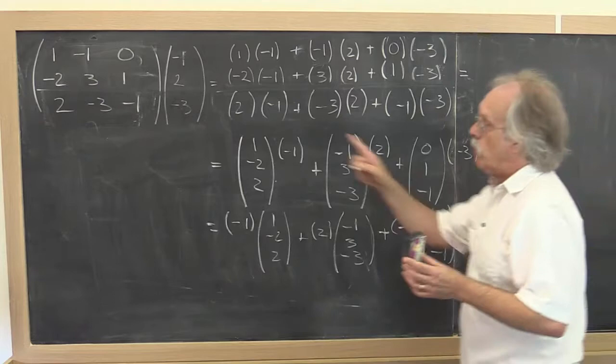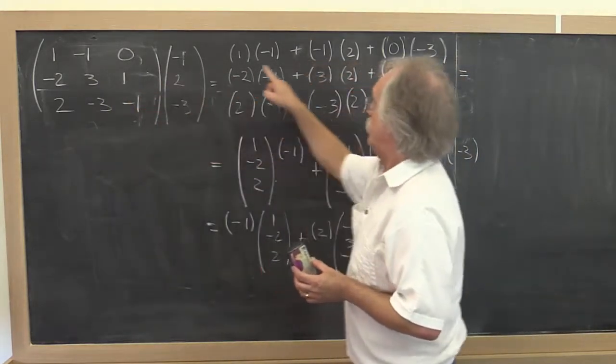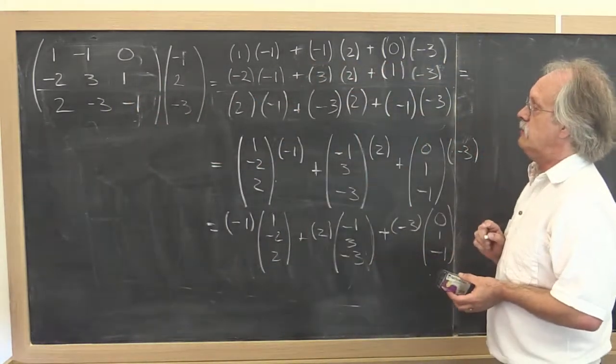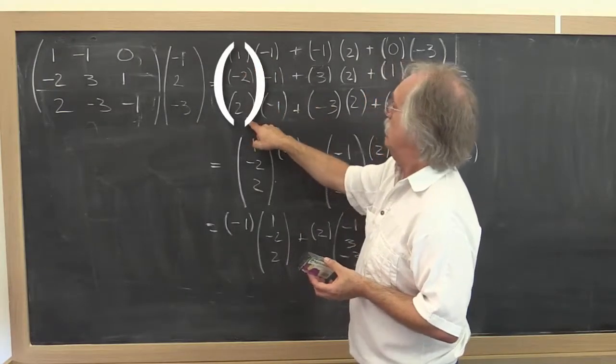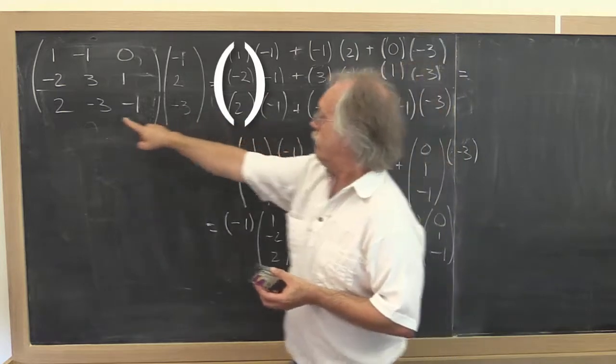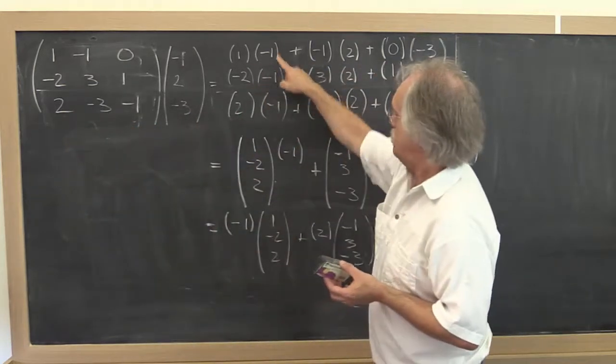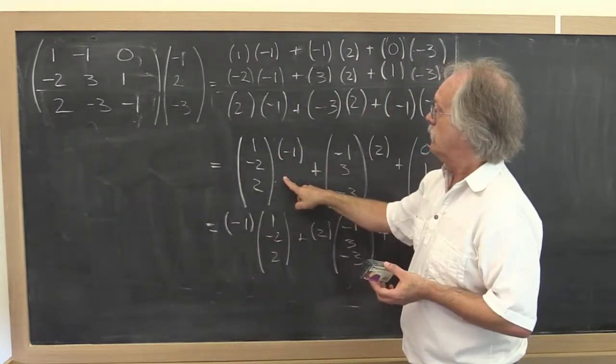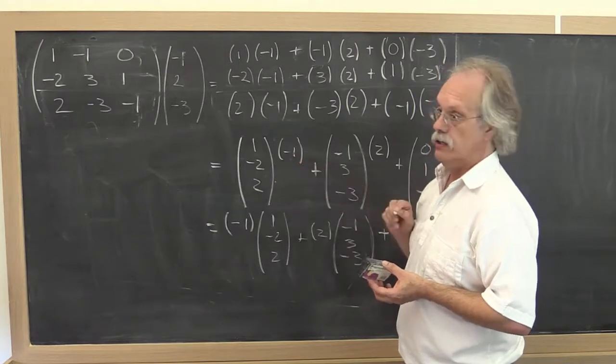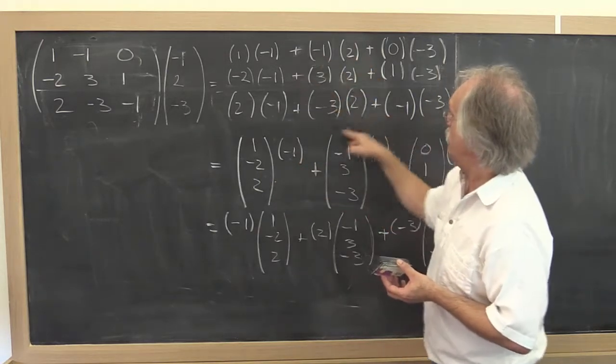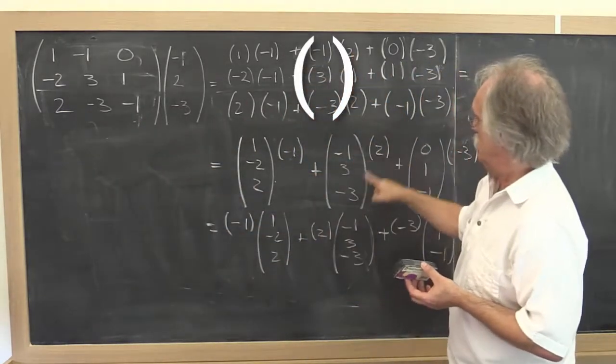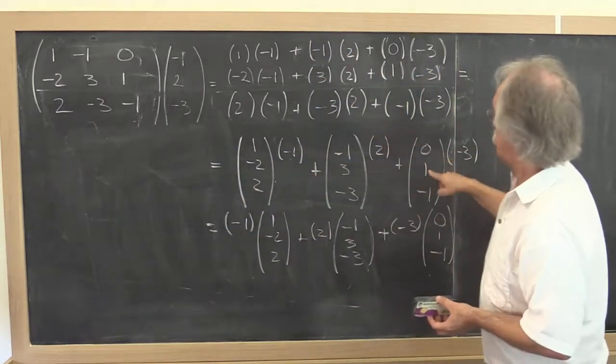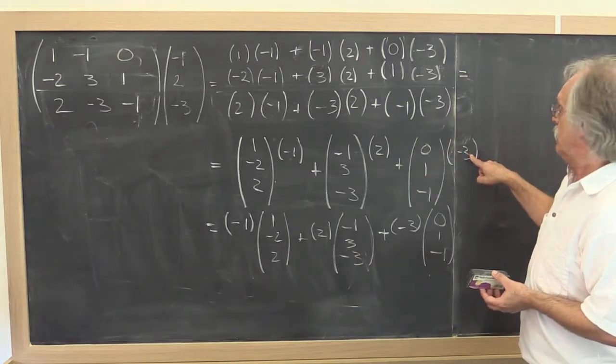Well, let's go back to the example we started with. Here we have written out everything that needs to be computed. So notice that this right here you could think of as the first column times minus 1, just scaling the first column by minus 1. Similarly, you can think of this right here as the second column multiplied by 2, and then the third column multiplied by minus 3.